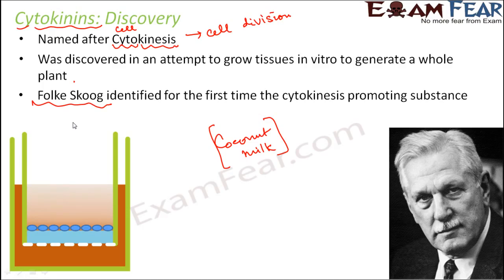Cytokinin was basically another plant growth-promoting hormone which is required along with auxin for the growth of the plant. In tissue culture, auxin alone could not regenerate the whole plant — auxin was already present but the whole plant could not be generated. The plant could be generated only when cytokinin was also added along with auxin.